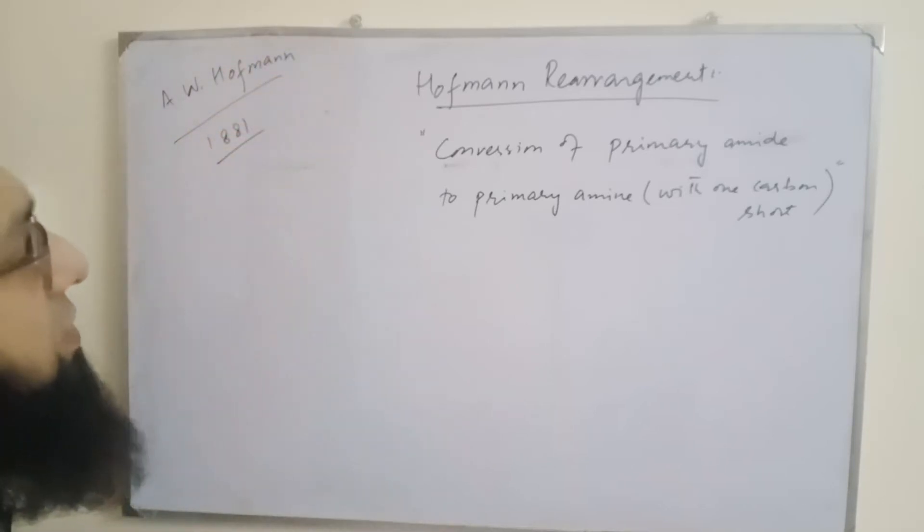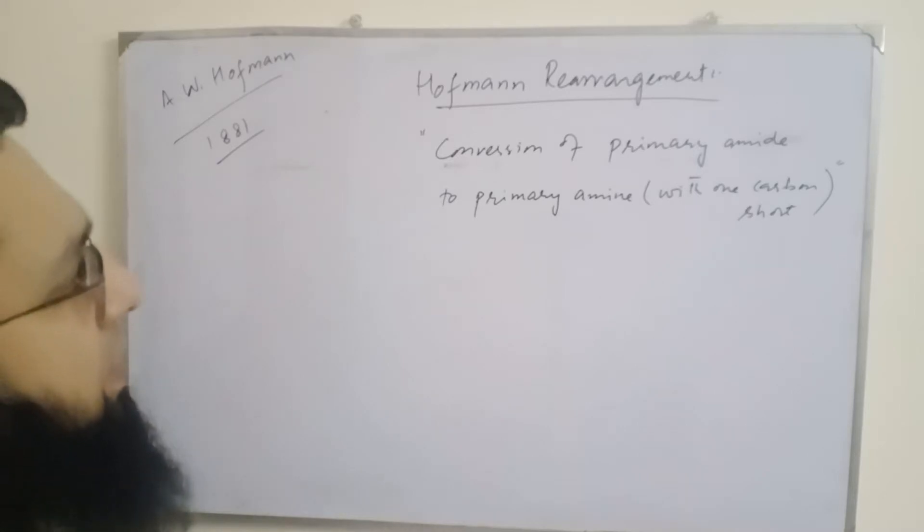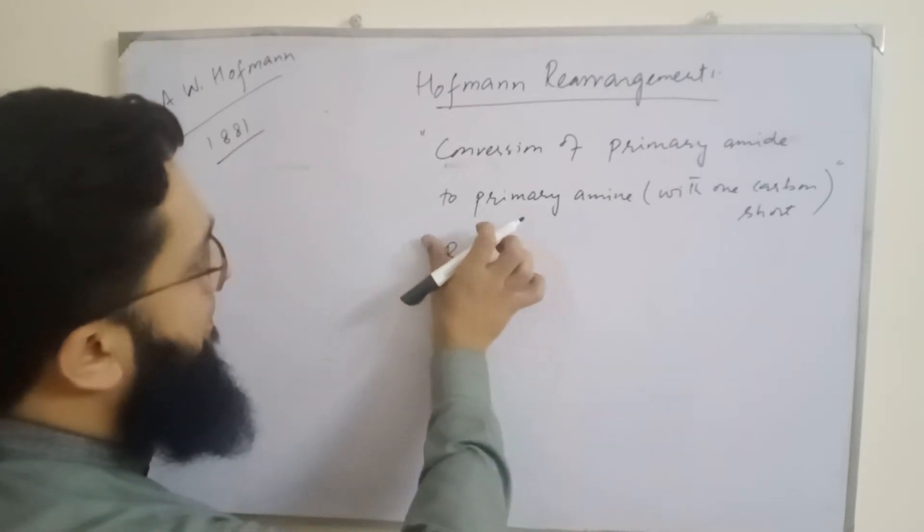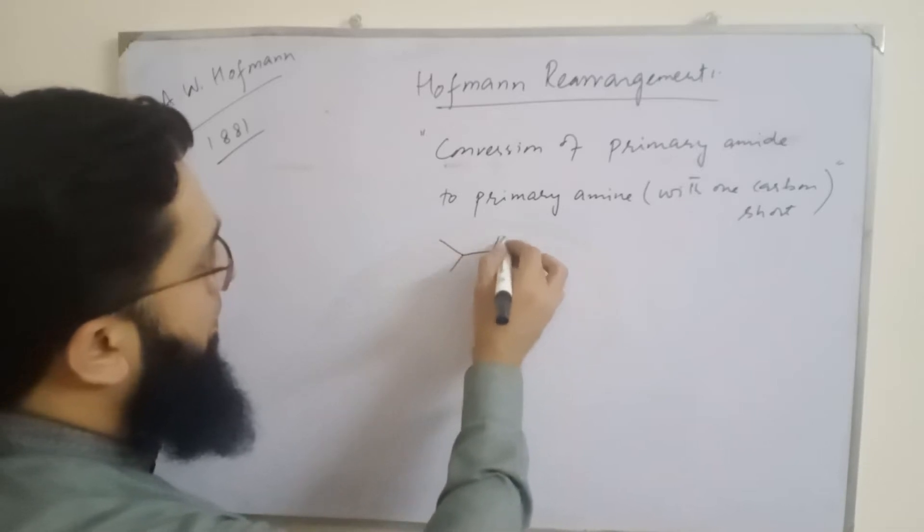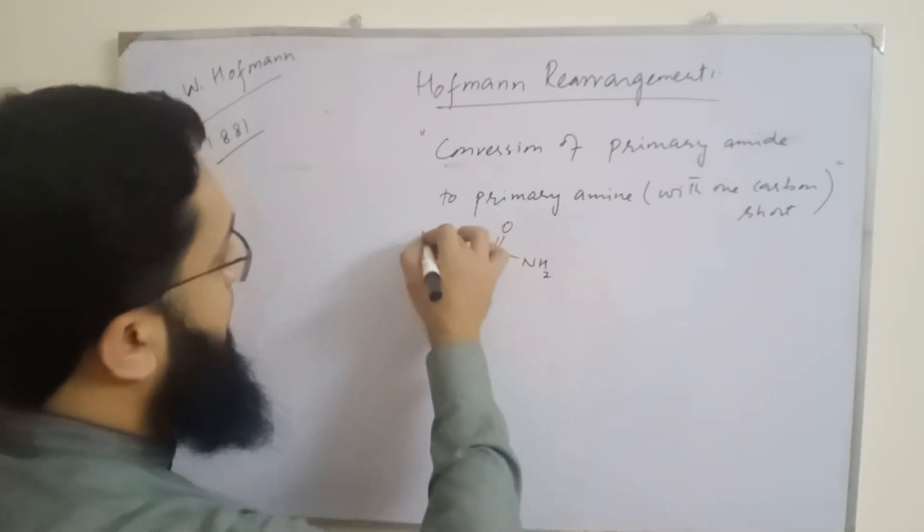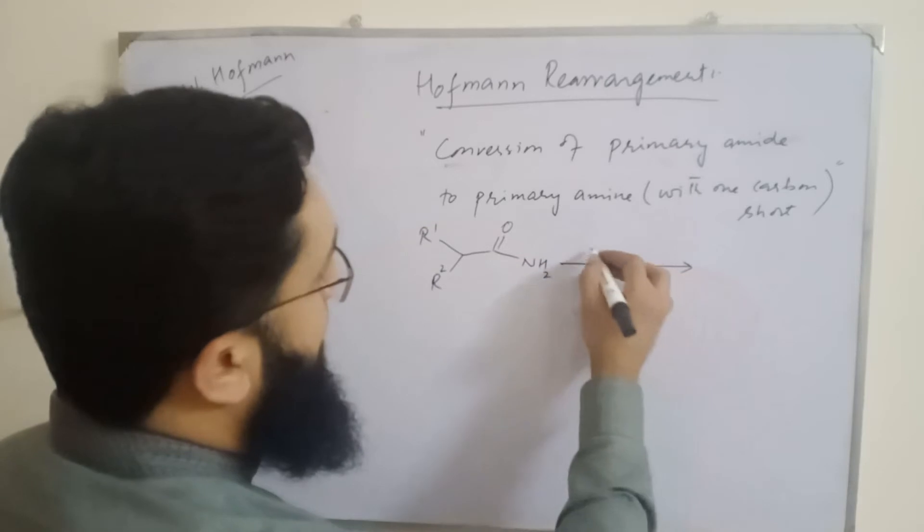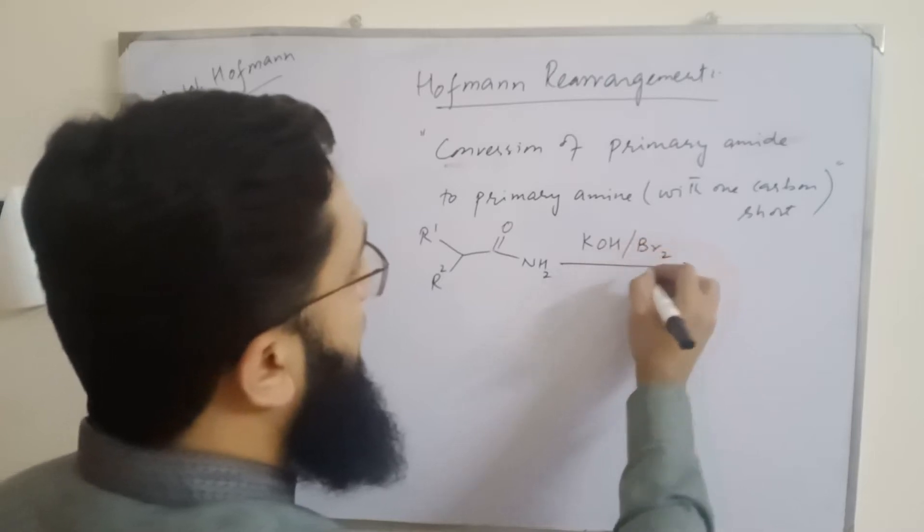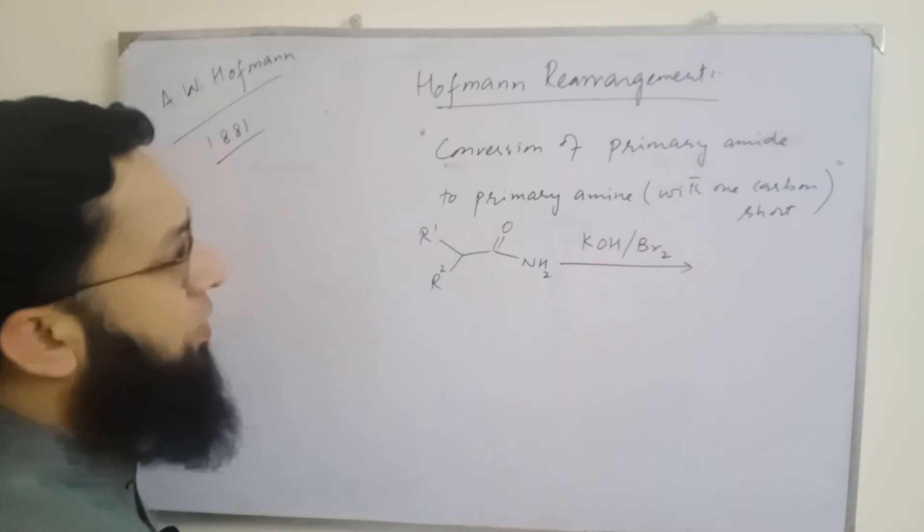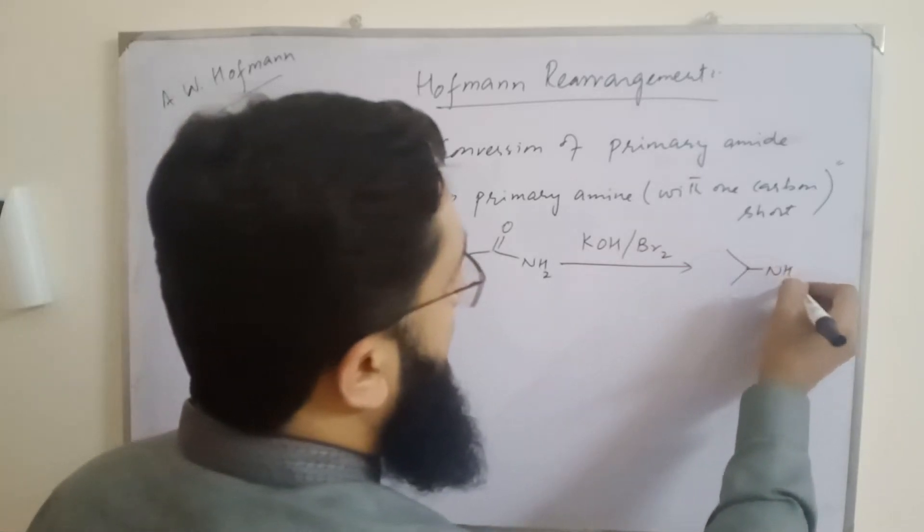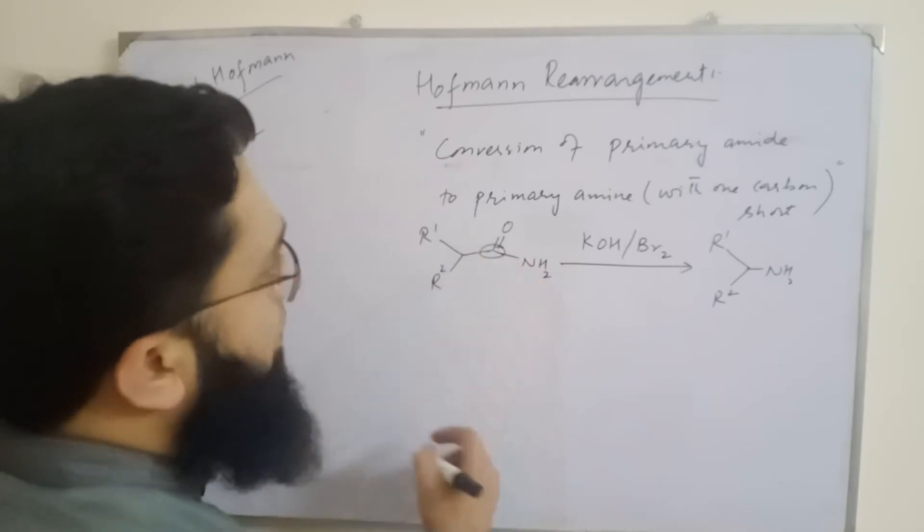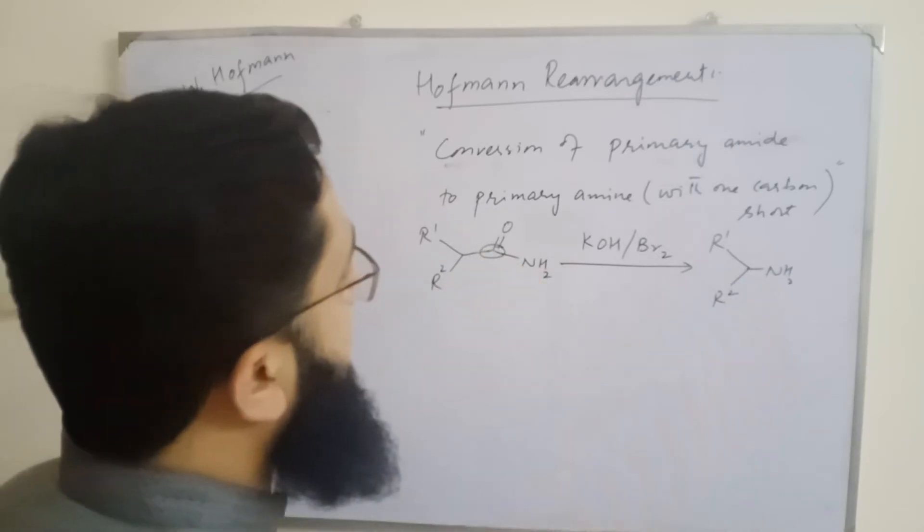When he was using acetamide and treating with base, the general reaction takes place in the presence of alkali hypochlorite (KOH or NaOH) with bromine or chlorine, and we get a primary amine. Here we can see this carbon is missing in the molecule. This reaction takes place under heating conditions. Now we see the mechanism.